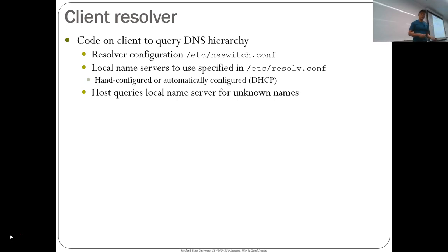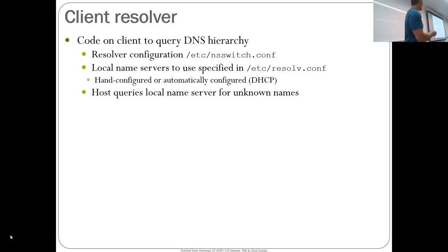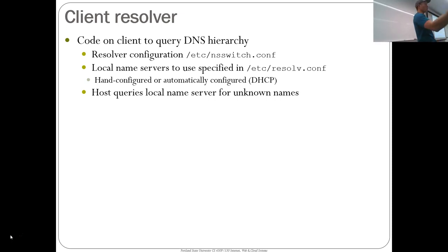The client resolver is code on the client to query the DNS hierarchy. On Linux it's configured using a file — local name servers are specified in resolv.conf, which you can either hand-configure or is automatically configured when DHCP runs. It says what is my local name server — I could hard-code this to 1.1.1.1, which I've done on my machine, or you could just get it from DHCP. You can actually see what got configured by DHCP on your laptop.